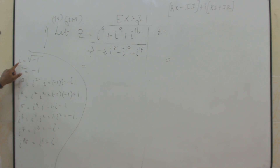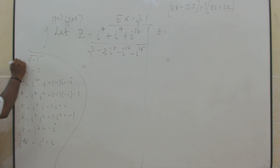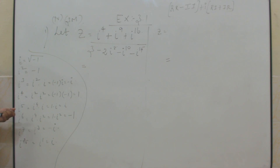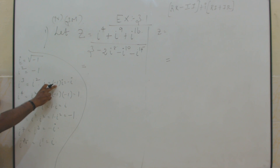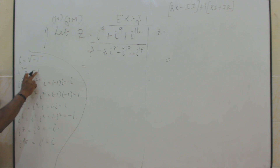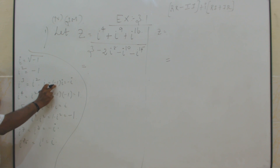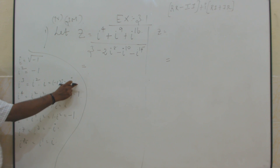i is the square root of minus 1. And what is i squared? That is minus 1. i cubed can be written as i squared into i. What is i squared? Minus 1. So i cubed equals minus 1 times i, which is minus i.